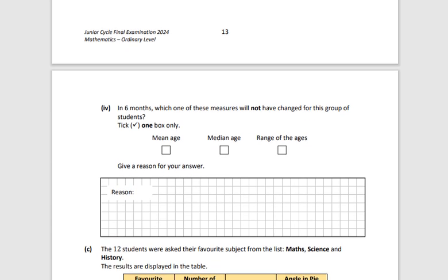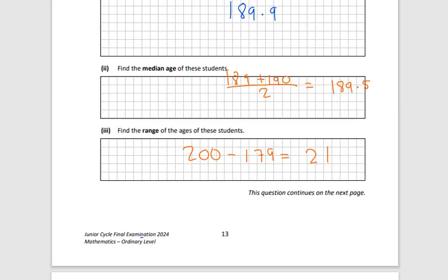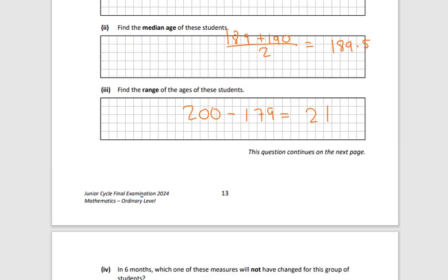In 6 months, which one of these measures will not have changed for this group of students? Well, it's going to be the range there. The reason is because the range is the biggest minus the smallest. So just imagine you had 10 minus 6. If 10 was the biggest and 6 was the smallest, that would give you 4. But then if you add on 4 months, so just 4 added on to both of them. So that's 14 minus 10. So now it's still a difference of 4. So the same happens here. Here, the biggest one was 200. So if you add on 6 months, that's just 206 minus, and then if you add on 6 to the 179 as well, that's 185. So the difference between them is still 21. So when you add on something to both numbers, the difference between them should stay the same.